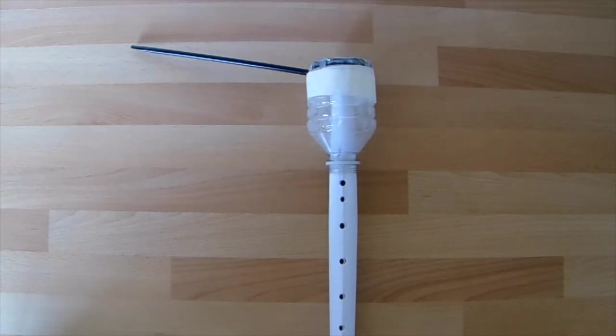Today we're going to make a membranophone. This produces sound by vibrating a stretched membrane. Kazoos and drums are both examples of this.